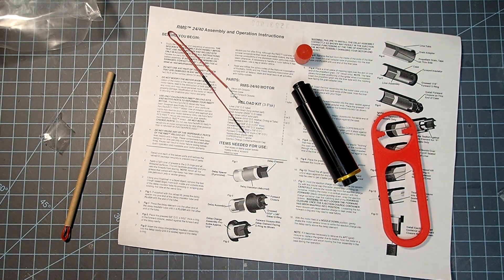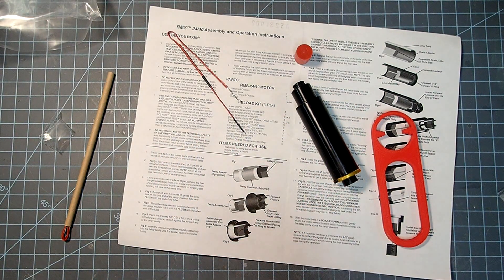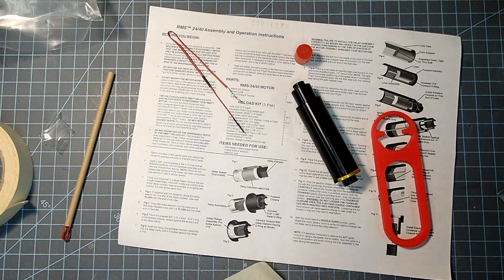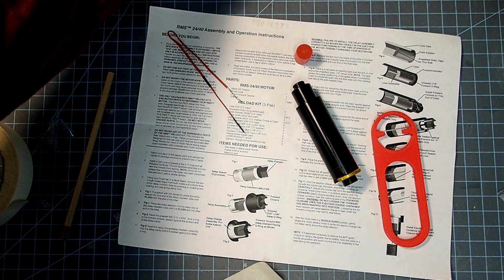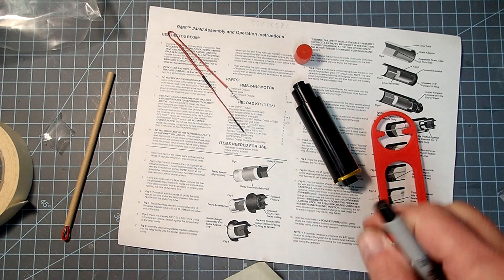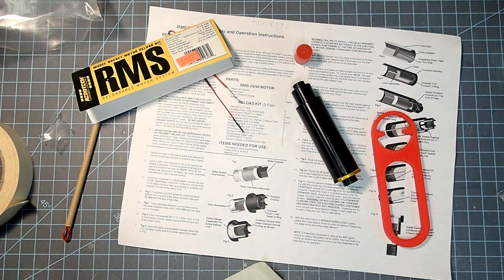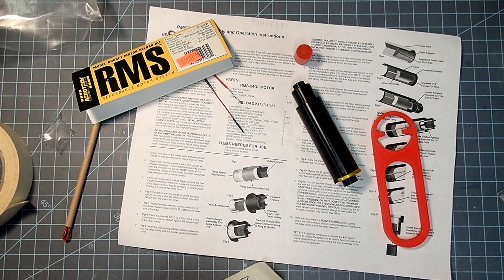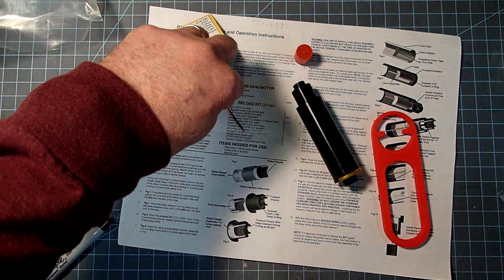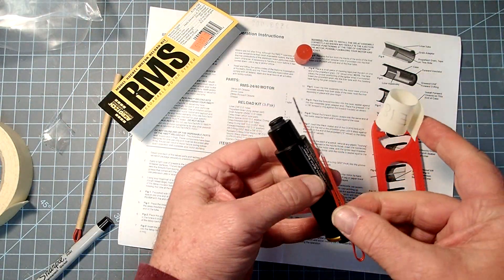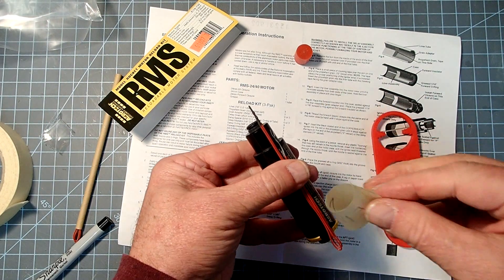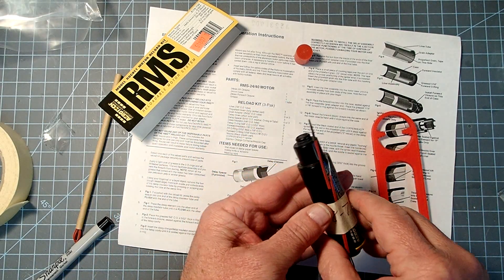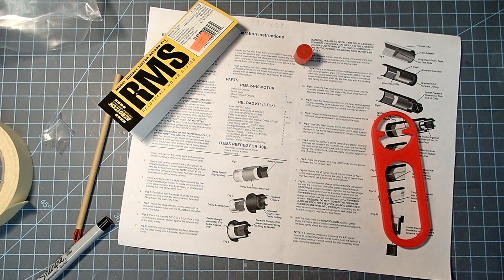Generally what I'll do with these, since once it's in the case, you have no idea what it is, I'll go ahead and take a piece of masking tape here and just write on it what your engine is. So, this was an E18-7. And I'll just take my igniter here and then the tape. And then I'll just put this in my box of things that are ready for launch.